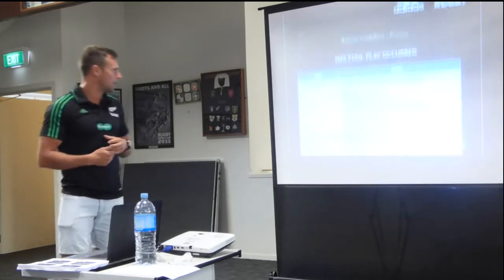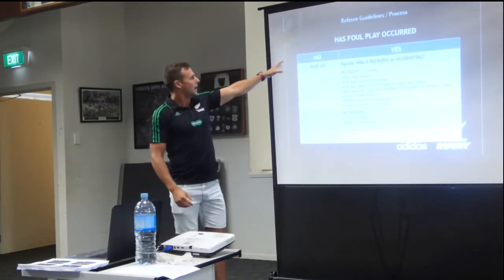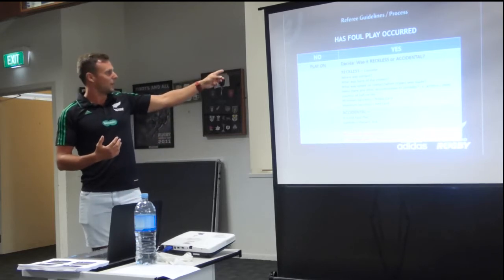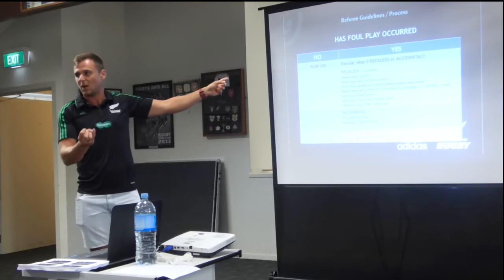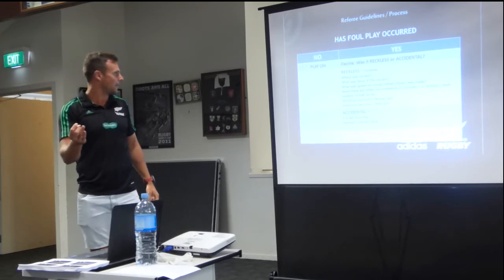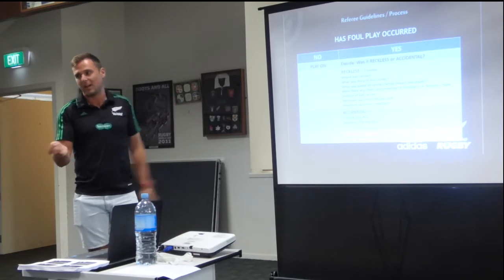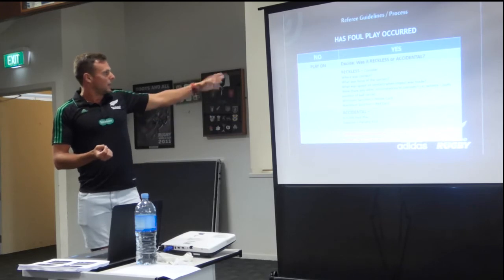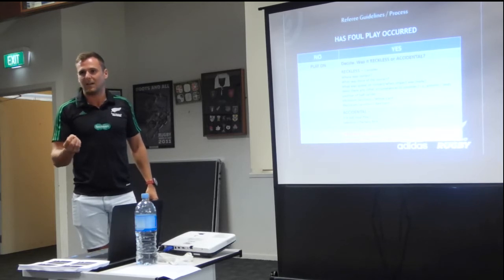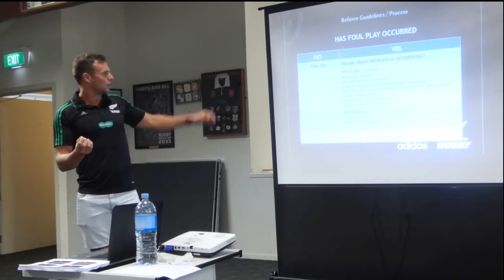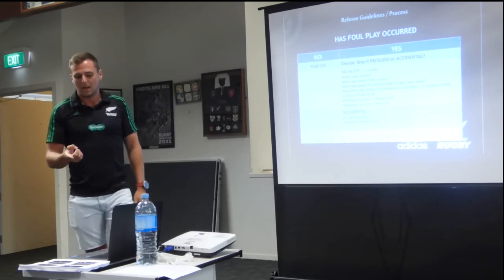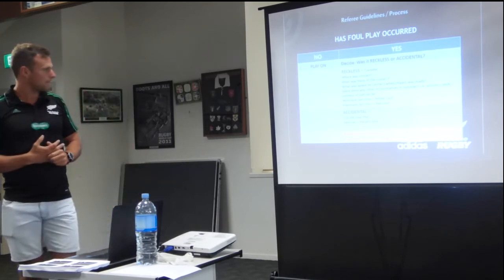The process we start with as referees is to ask: has foul play occurred? If no, everyone plays on. If yes, we decide on the action. We've seen the contact was high — so foul play. Was it reckless or accidental? If accidental, we're going penalty kick. If reckless, our minimum sanction immediately becomes a yellow card. Then we look at the force to determine whether it's yellow or red card.